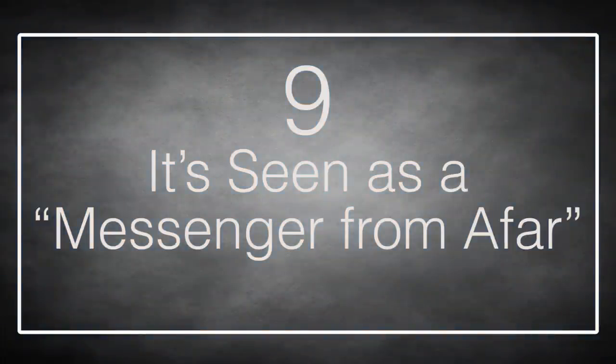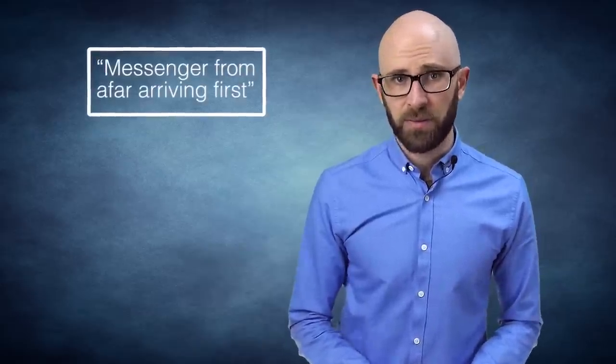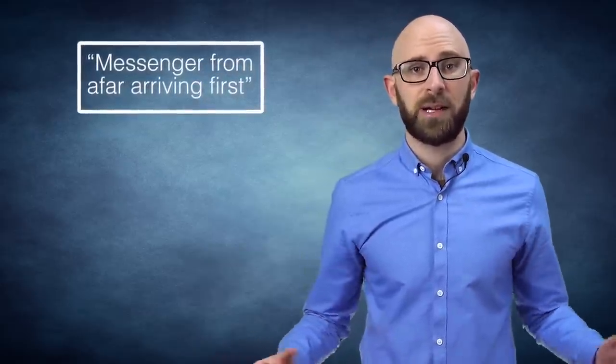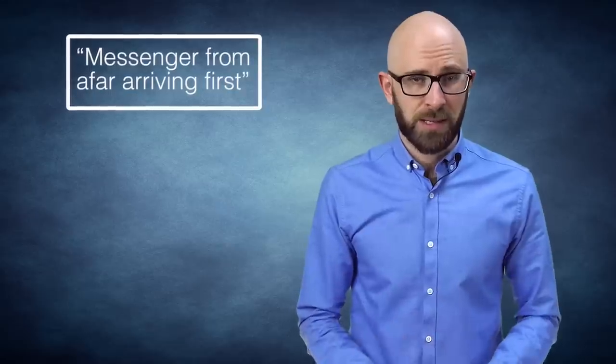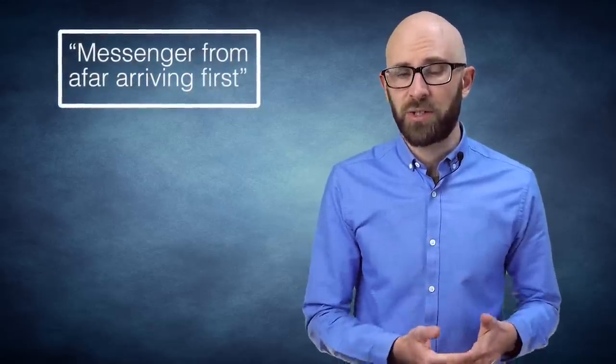Number 9. It's Seen As A Messenger From Afar. Officially designated 1I-2017U1 by the International Astronomical Union, the object's unofficial but for some equally unwieldy nickname Oumuamua was given by the Pan-STARRS team that discovered it. The word is Hawaiian for messenger from afar arriving first, and it's particularly apt considering the potentially breakthrough data that the object carries about the formation of other solar systems.